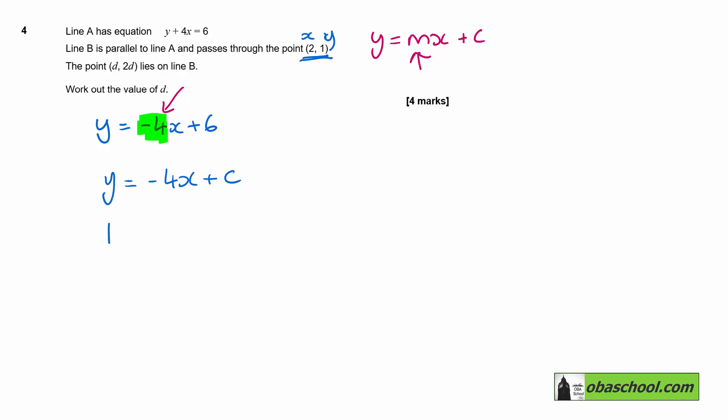And then we can substitute in 1 is equal to negative 4 times 2 plus c. 1 is negative 8 plus c. And therefore c is equal to 9. So our line is y equals negative 4x plus 9.